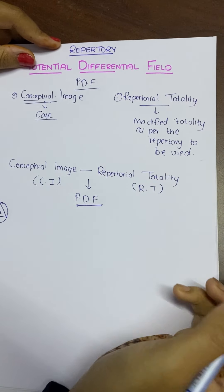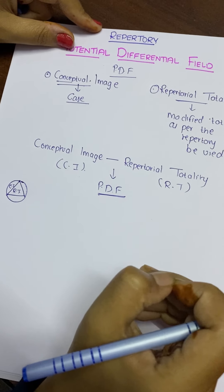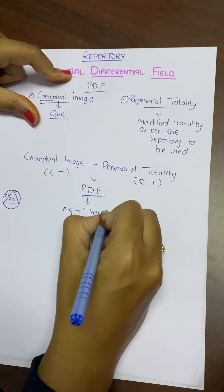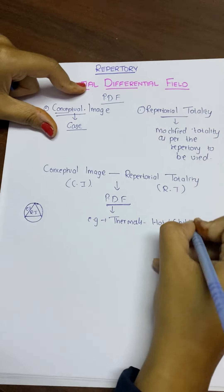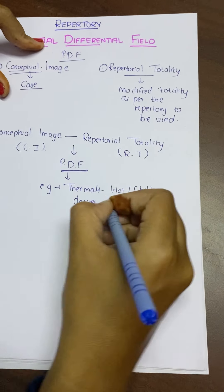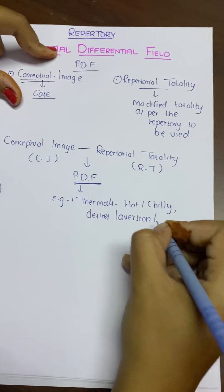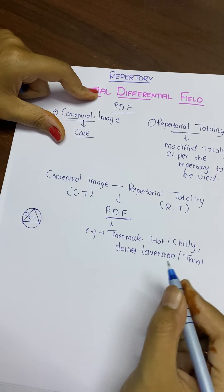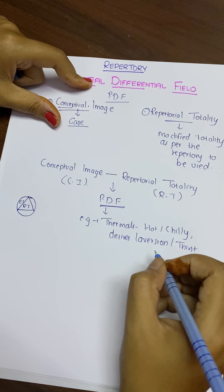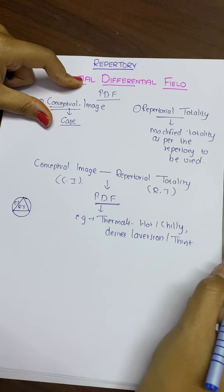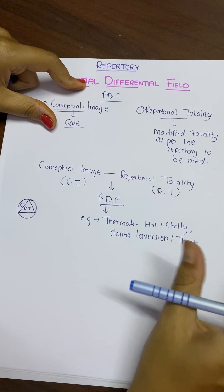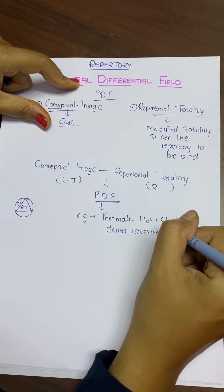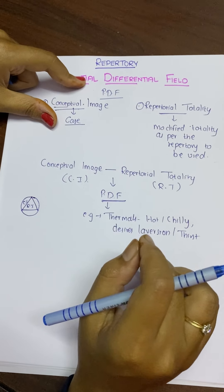The Potential Differential Field contains finer general symptoms or striking characteristic symptoms. For example, thermals — whether the patient is hot or chilly — desires, aversions, thirst, and any characteristic expressions or sensations not well represented in the repertory. So any symptom that we are not including in the Repertorial Totality, and which is not matching in the repertory, comes under the Potential Differential Field.